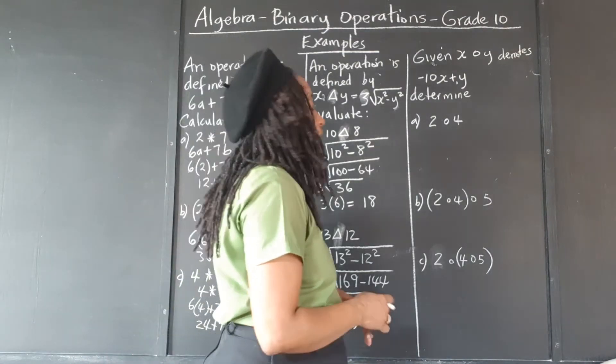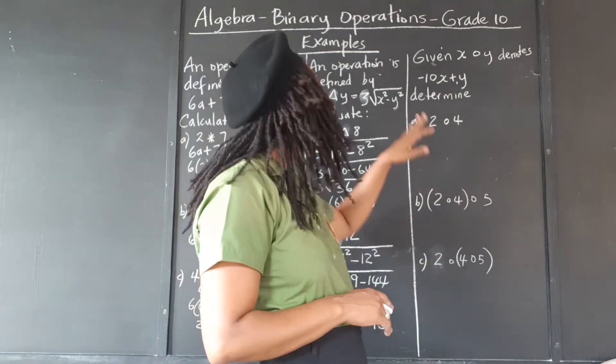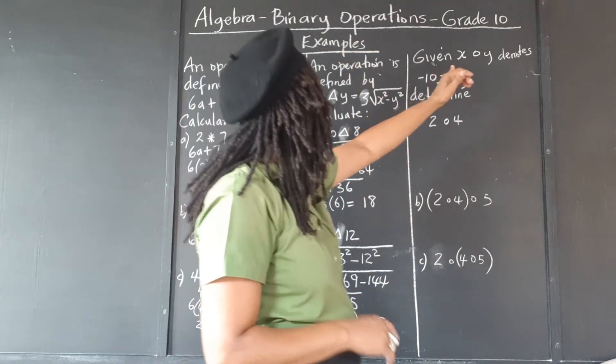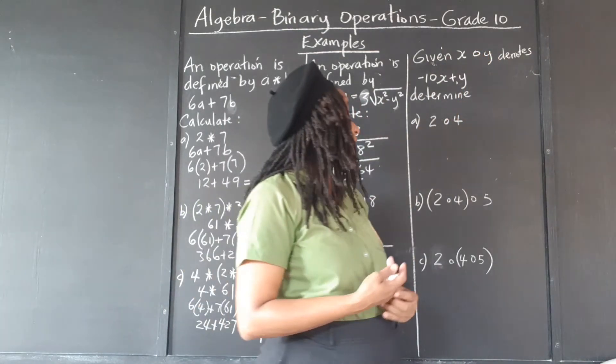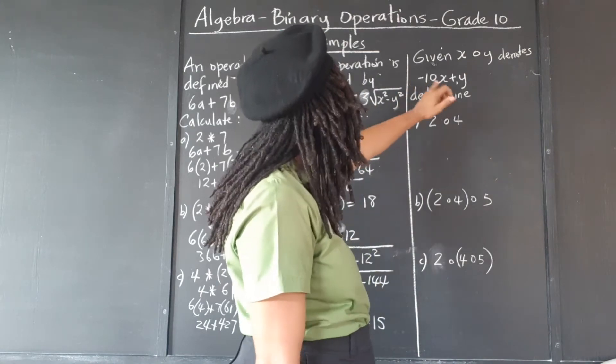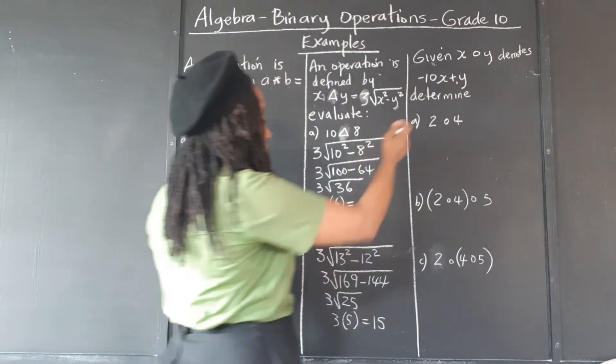So now we have x and the operation here is represented by a circle. Any symbol can be used. So a circle, and this denotes negative 10x plus y. So wherever, and they give us 2, 4. So wherever